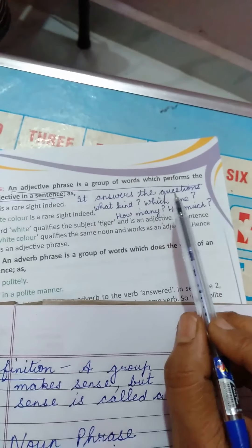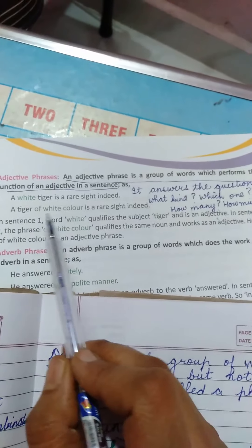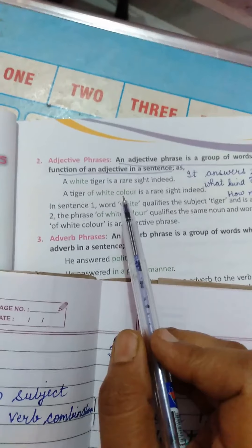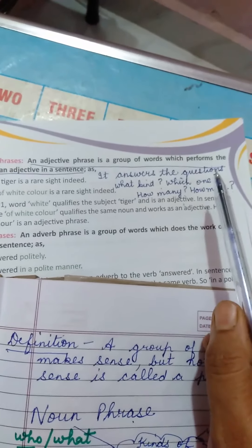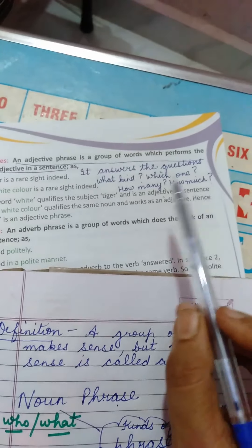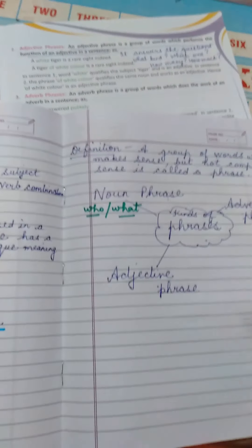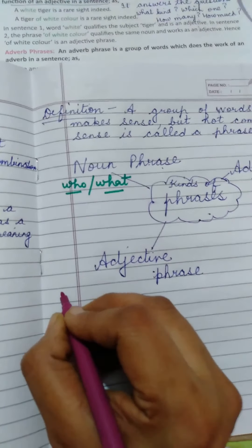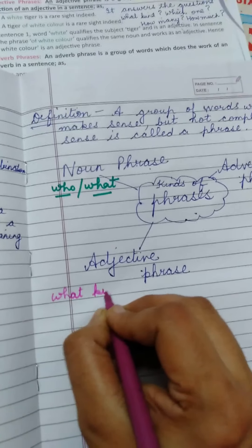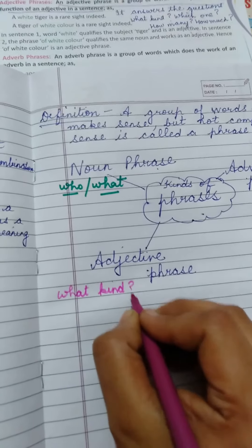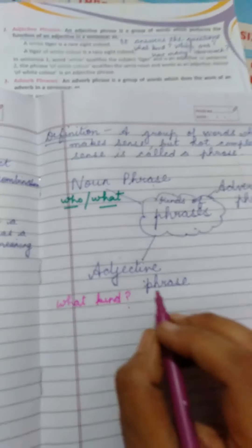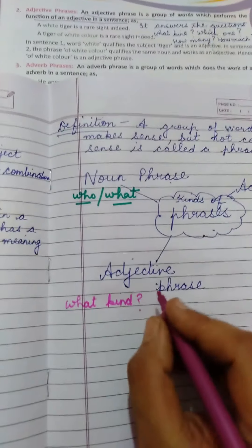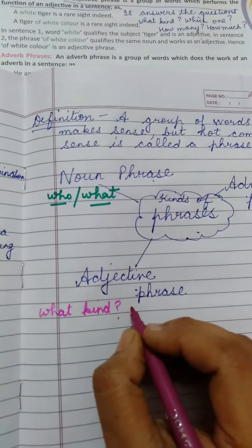It answers the questions like what kind of tiger — of white color — which one, how many, how much. In your notebooks, start writing with a different color: adjective phrase — it answers the questions what kind, which one, how many, how much. Writing again and again is going to fix this in your mind so you will never forget it even in your higher classes.